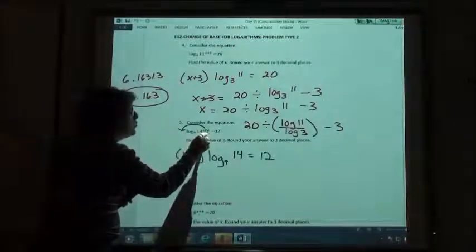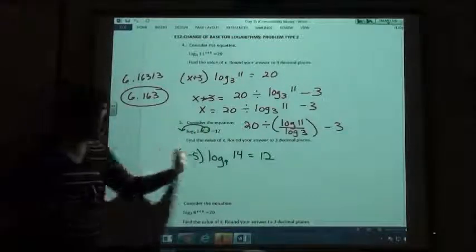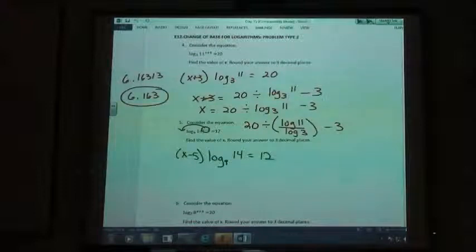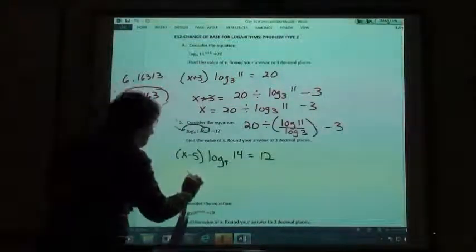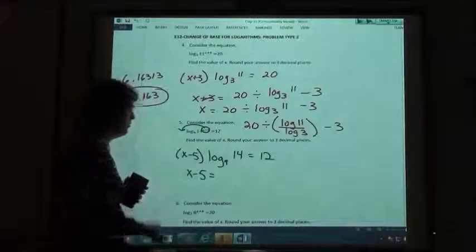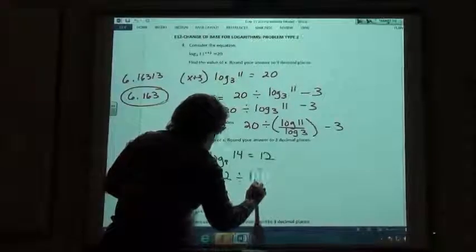So all we did is we took this exponent, the x minus 5, put it in front of our expression, and then all the rest stayed the same. Right? What did we do next? And then we put the x minus 5 equals 12 divided by log 9.